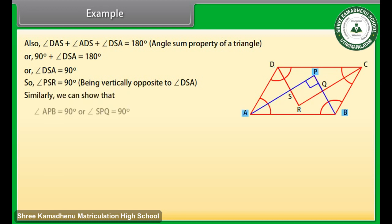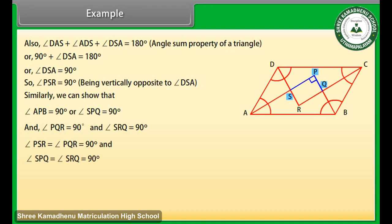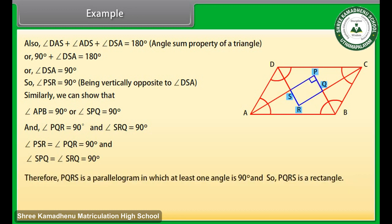Similarly, we can show that angle APB is equal to 90 degrees, or angle SPQ is equal to 90 degrees; and angle PQR is equal to 90 degrees; and angle SRQ is equal to 90 degrees. We can see that angle PSR, angle SPQ, angle PQR, and angle SRQ are all equal to 90 degrees. Therefore PQRS is a parallelogram in which at least one angle is 90 degrees, and so PQRS is a rectangle.